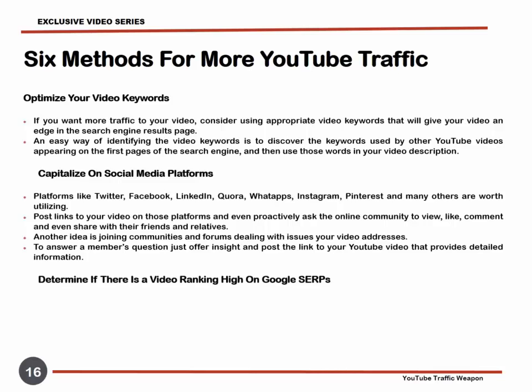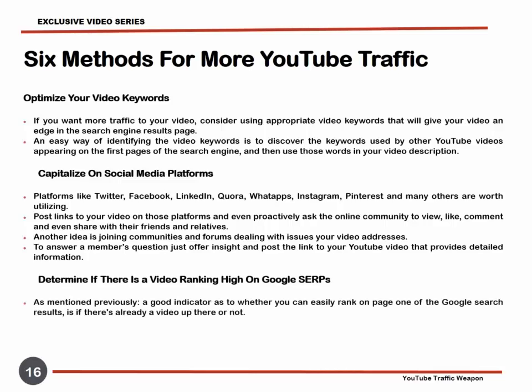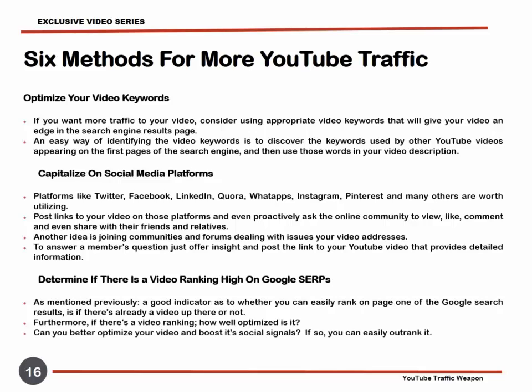Determine if there is a video ranking high on Google SERPs. A good indicator as to whether you can easily rank on page 1 of the Google search results is whether there is already a video up there or not. Furthermore, if there is a video ranking, how well optimized is it? Can you better optimize your video and boost its social signals? If so, you can easily outrank it.